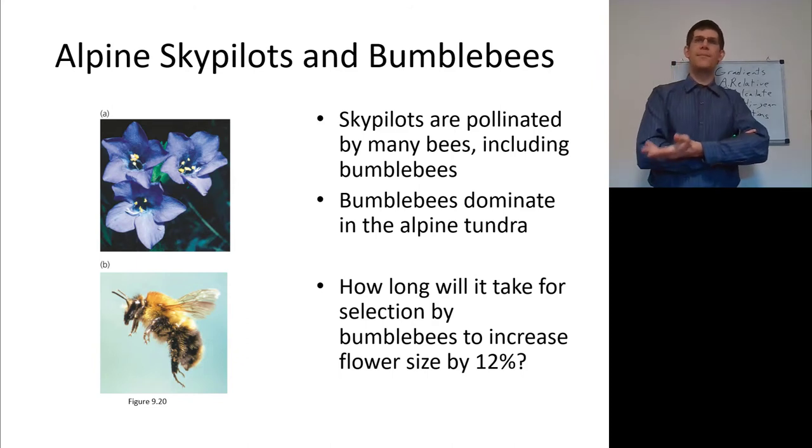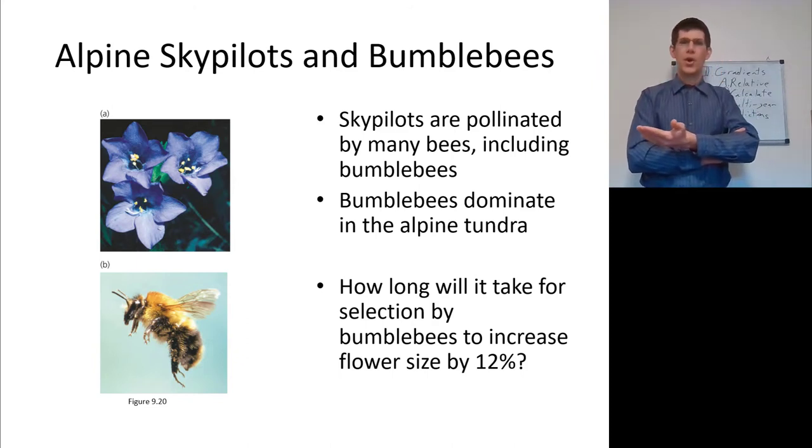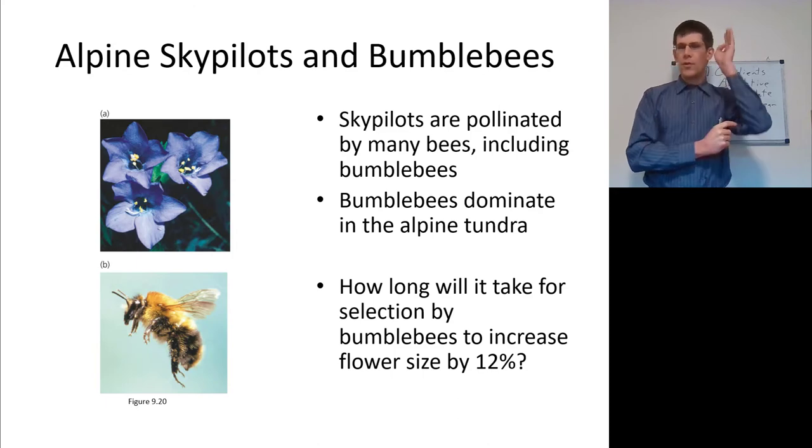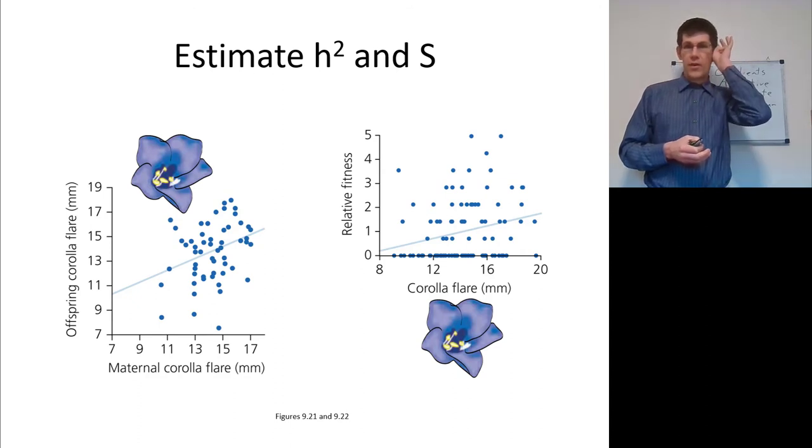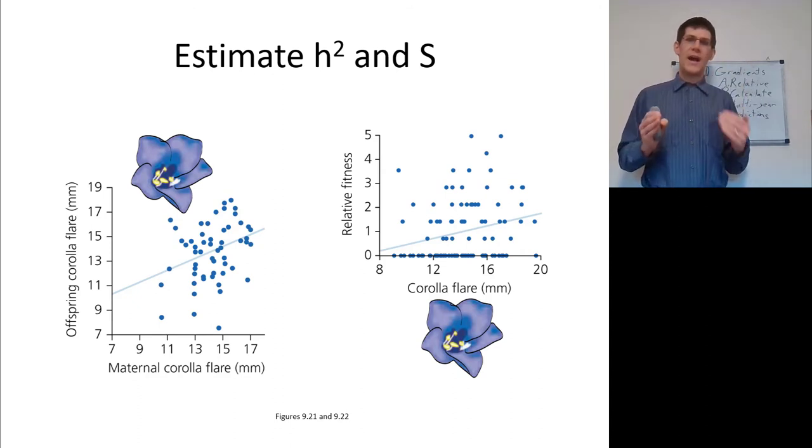Let's look at another example done on alpine skypilots with bumblebees. Skypilots are these plants that grow on montane meadows, and they're pollinated by many different types of bees, including of course bumblebees. Bumblebees are more common, bigger bumblebees, in the alpine tundra, and other bees are more common in the lower area. So how long does it take for selection by bumblebees, bigger bees like bigger flowers, to increase the flower size by 12%? Well, here's where a common garden is useful. You're going to get that maternal corolla flare, so the mother's size and the offspring size. You can't get a mid-parent because they didn't actually know who the father was, kind of a problem there, but you would get the mid-parent value if you could do controlled crosses. And then you get the relative fitness. So plants with a larger corolla are going to have a higher relative fitness. So you've got a heritability measure and you've got an S measure.